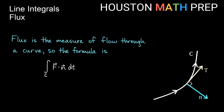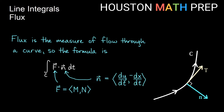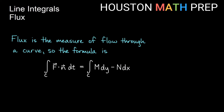We can think of our vector field F as some vector m comma n. If our normal vector was y prime comma negative x prime, that would make it dy/dt comma negative dx/dt. Putting that all together, our differential form for flux is the integral over the curve of m dy minus n dx. This is our differential form, much like we did for circulation line integrals.